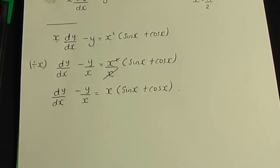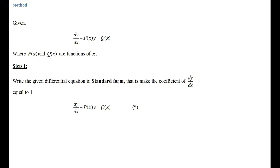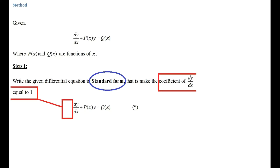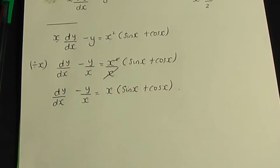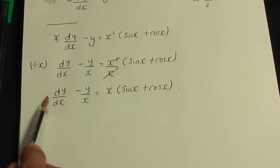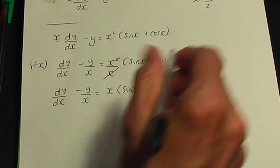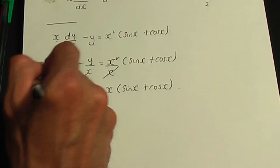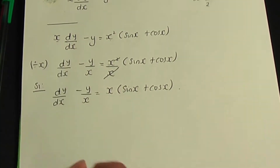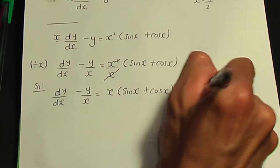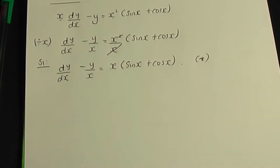Step number 1 is to write our differential equation in standard form. Our equation is already in standard form, as the coefficient of dy/dx is 1. Step 1 is complete, and I'm going to name that standard form equation 'star'.